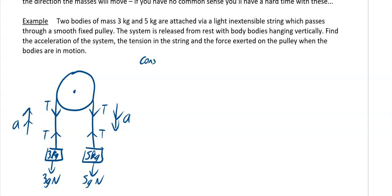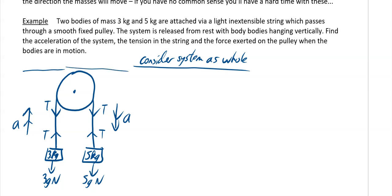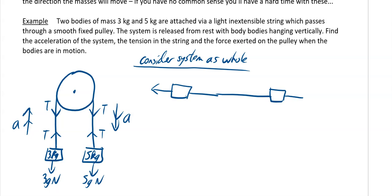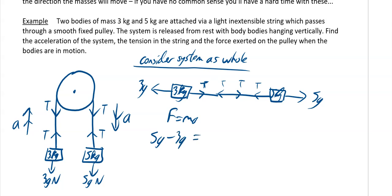Consider the system as a whole. If you imagine stretching the strings out horizontally, you'd have 5g Newtons driving in one direction and 3g Newtons opposing. All the tension forces T cancel out. Using F equals MA, the overall net force is 5G minus 3G, and the total mass is 3 plus 5 equals 8. So 2G equals 8A, and with G equal to 10, that gives 20 divided by 8, so A equals 2.5 meters per second squared.